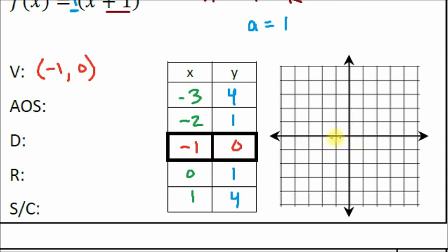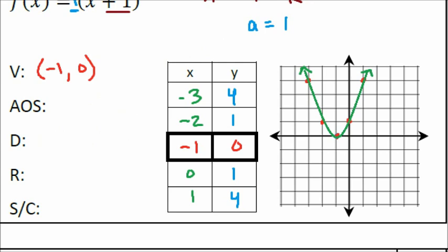Let's plot those points. The vertex (−1, 0) in red. Then (−2, 1), (−3, 4), (0, 1), and (1, 4). That definitely looks like a parabola. Let's draw a nice parabola through the points and put arrows on the ends.